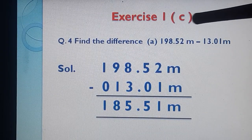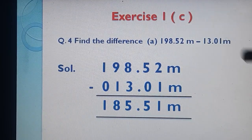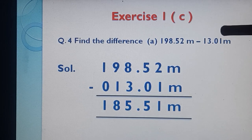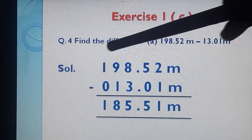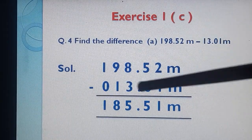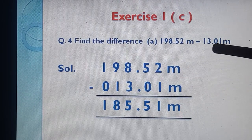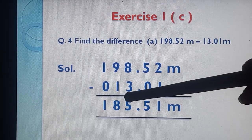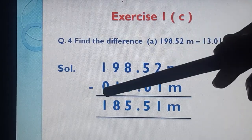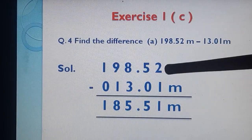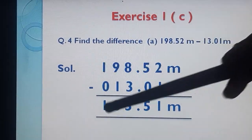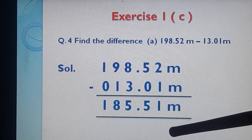This was your question — question number 4, parts A to D of exercise 1C. Let's discuss part A: find the difference. 198.52 m − 13. Since 13 has 3 at the ones place and 0 at the tenths place, write it as 13.01 m. Write 0 below where no digit is given. Subtracting: 2−1=1, 5−0=5, 8−3=5, 9−1=8, 1−0=1. Answer: 185.51 m.